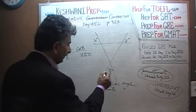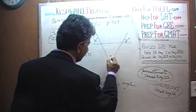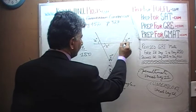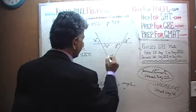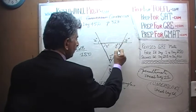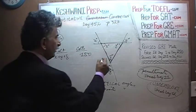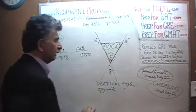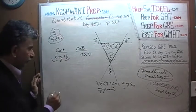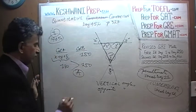So if this angle is z degrees, its opposite is also z. If this is x, its opposite is also x. If this is y, its opposite is also y. Now we look at the triangle formed — the sum of angles in a triangle must add up to 180. So x plus y plus z equals 180. Comparing 180 versus 150 — 180 is bigger. The answer is A.